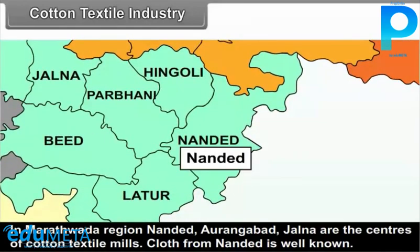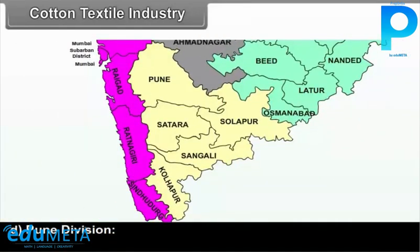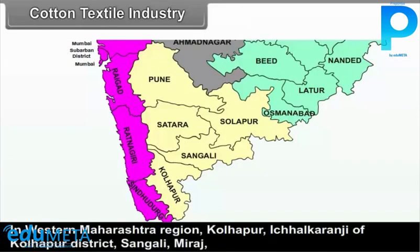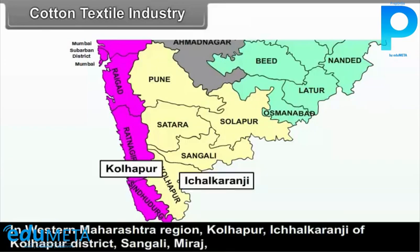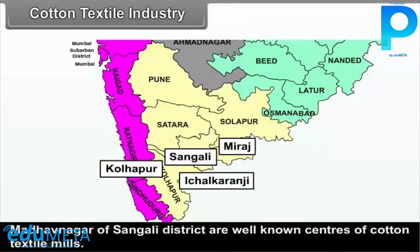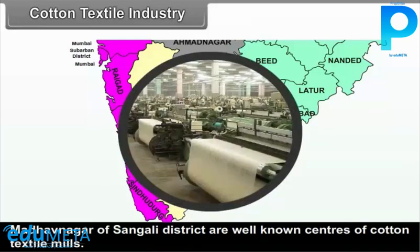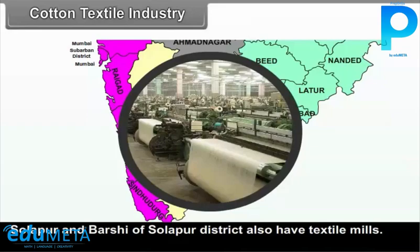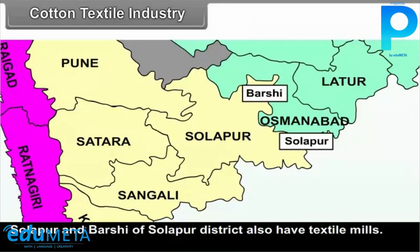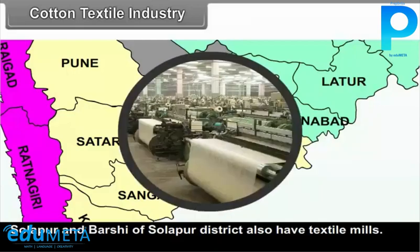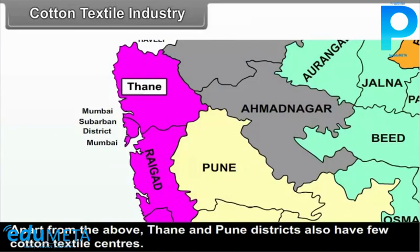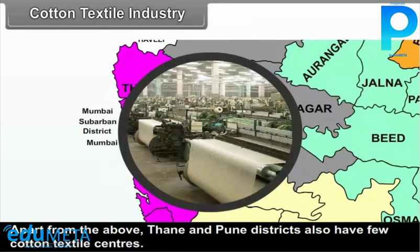Cloth from Nanded is well known. In Pune Division, in western Maharashtra region, Kolhapur, Ichalkaranji of Kolhapur district, Sangli, Miraj and Madhavnagar of Sangli district are well known centres of cotton textile mills. Solapur and Barshi of Solapur district also have cotton textile mills. Apart from the above, Thane and Pune districts also have a few cotton textile centres.